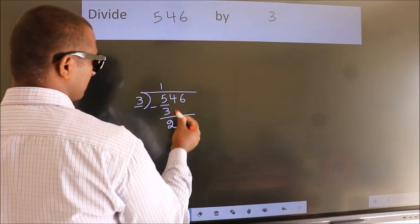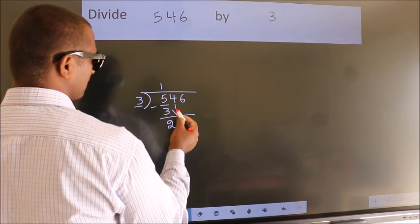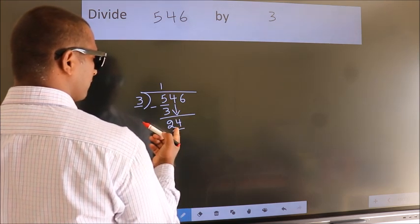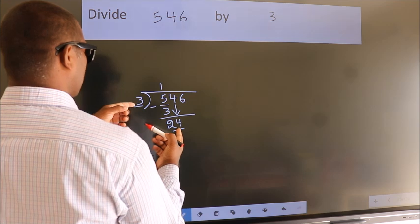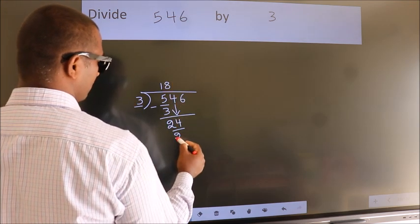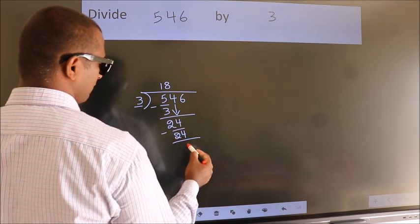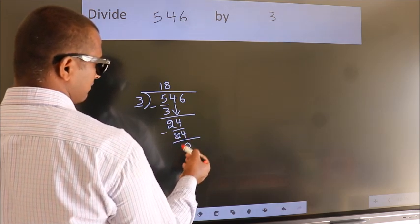After this, bring down the beside number. So, 4 down, giving us 24. When do we get 24 in the 3 table? 3 times 8 equals 24. Now, we subtract. We get 0.